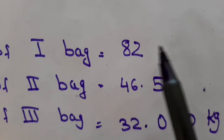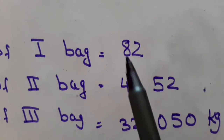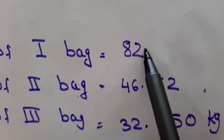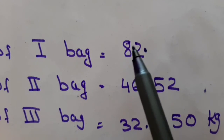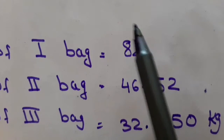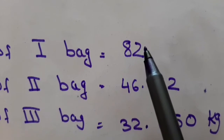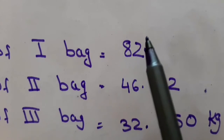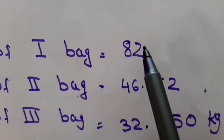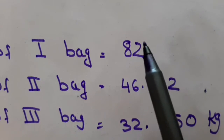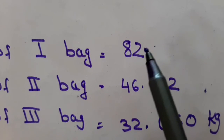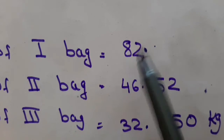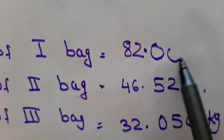Again, these are not like decimals. In fact, 82 does not have a decimal at all. So you will put the decimal after the last digit, that is after the 2. If there is no decimal, you can put it at the rightmost place. After the decimal, you can put as many zeros as you want. The maximum number of digits after the decimal here is 3, so you will put 3 zeros after 82 to make it 82.000.